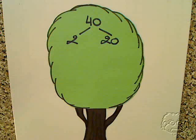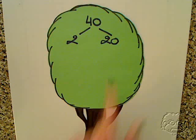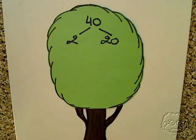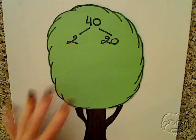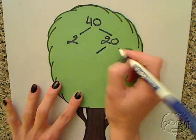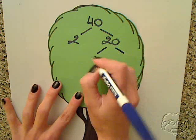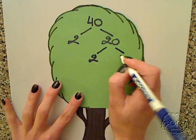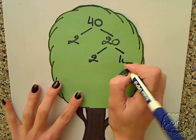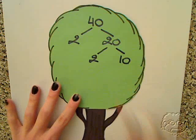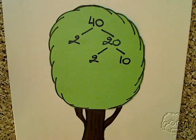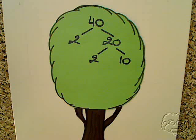2 is a prime number, so we're going to stop here. Now 20 is a composite number, so we're going to break it down further. 20 can be divided by 2 and 10. 2 is a prime number, therefore we're going to stop here. 10 is a composite number, therefore we're going to break it even more.